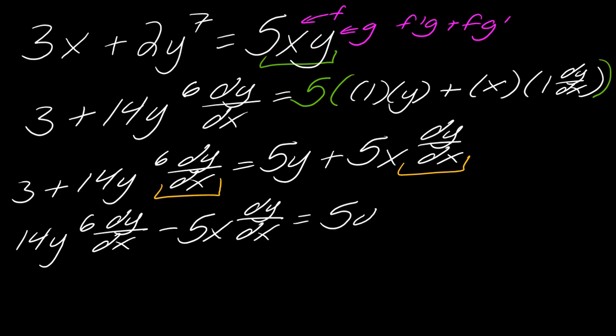Now, going to the other side, I had the 5y on this side, but what I want to do is I want to bring this 3 over. So it's a positive 3 on this side, so to bring it over to the other side, I'm going to have to subtract it off.